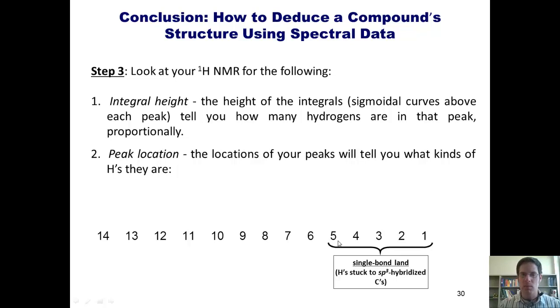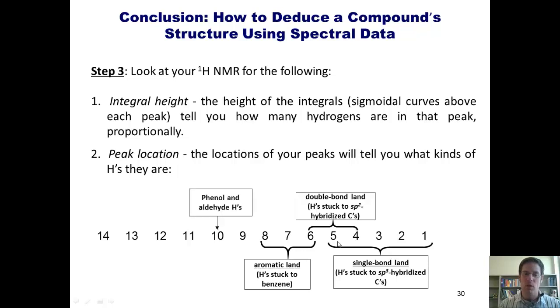Once again, if they're one to five, single bond land. Four to six, double bond land. Six to eight, aromatic land. Ten, phenols or aldehydes. Twelve to fifteen, carboxylic acids or amides. Anywhere kind of in this region would be the default for alcohols and amines.